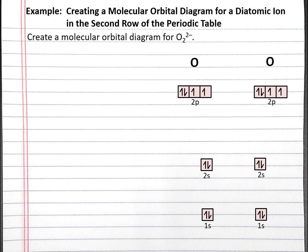In molecular orbital theory, we're combining atomic orbitals from multiple atoms to produce molecular orbitals that span across those atoms. We can combine the 1s orbitals from both oxygen atoms to produce two new molecular orbitals, designated the sigma 1s bonding and sigma 1s antibonding molecular orbitals. The bonding molecular orbital is lower in energy than the antibonding molecular orbital, and the antibonding molecular orbital is designated with an asterisk.